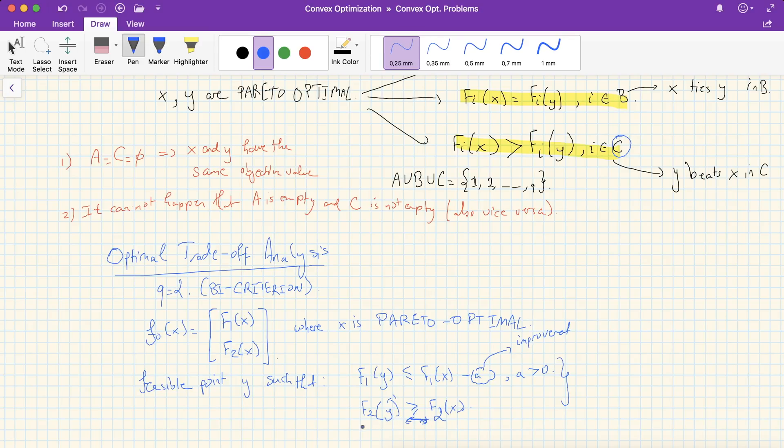whereas A increases slightly, in other words, this bound is not affected that much, we say that there's a strong trade-off between the objectives, near x. With a small sacrifice in the second objective, in that case we say that the trade-off is weak, near x.